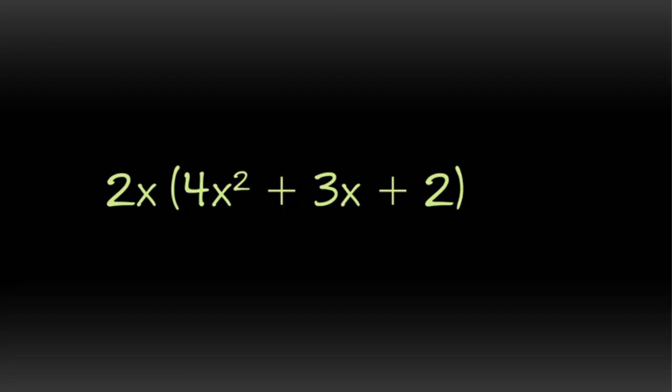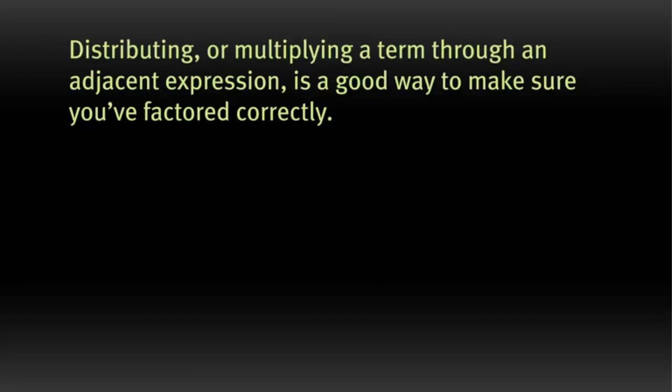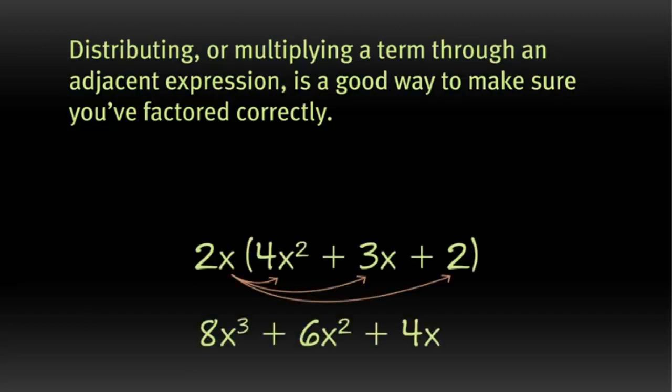Now, the reverse of factoring is distributing, or multiplying a term through an adjacent expression. This can be a good way to check and make sure you've factored correctly. For instance, if we multiply 2x through the other three terms in the expression we have, we'll go back to our original expression. 8x cubed plus 6x squared plus 4x. So we know we've factored correctly.